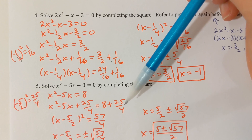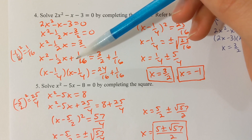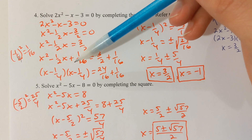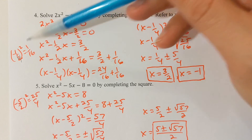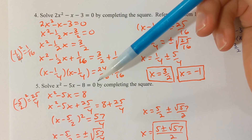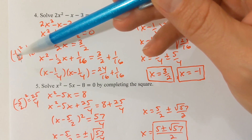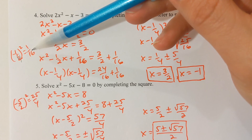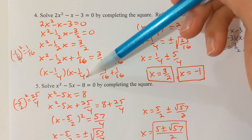As a hint: when you're getting to the point in the completing the square process where you're going to factor, the factors are always going to be the same, and it will actually be the number that you're squaring in the previous line. That will always happen. Because I'm squaring a negative 1/4 to get this 1/16, I'm going to have minus 1/4 in the two factors.